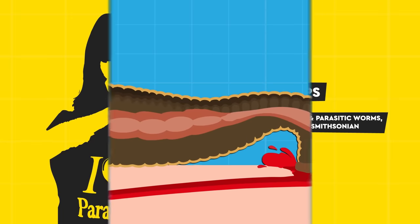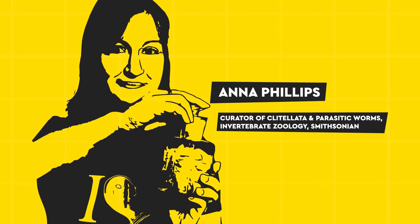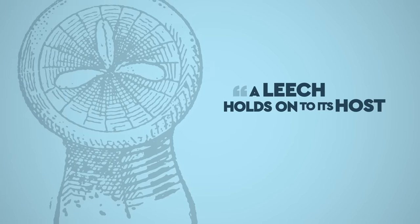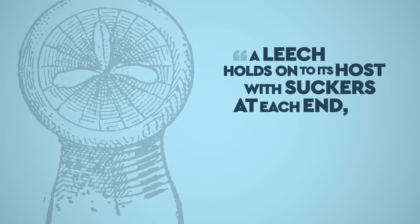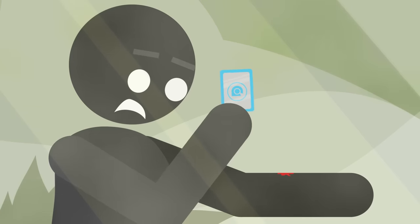So, how should you remove a leech? According to Anna Phillips, a curator and leech expert at the Smithsonian, a leech holds onto its host with suckers at each end. Breaking the seal is enough to pull them off. Gently slide a flat object, a fingernail or credit card, for example, under the edge of the sucker, and it should let go.